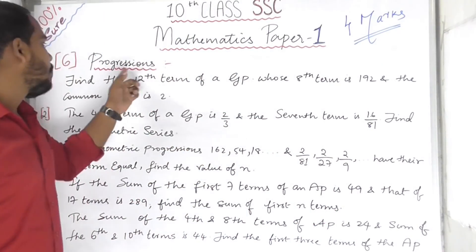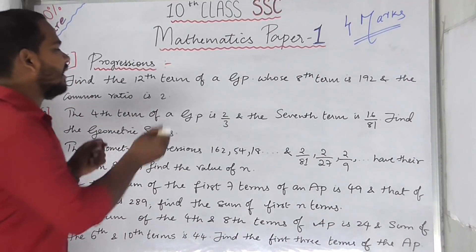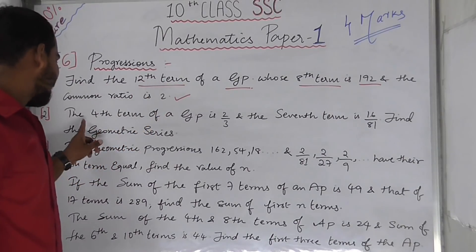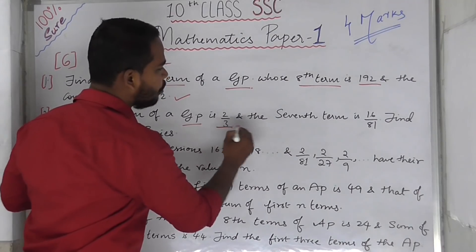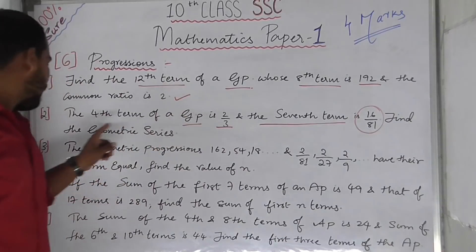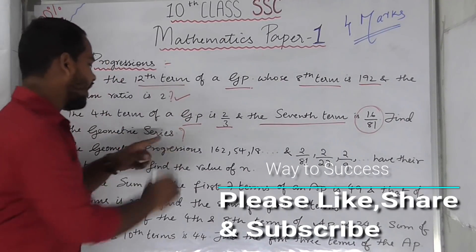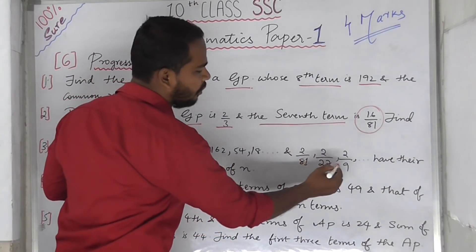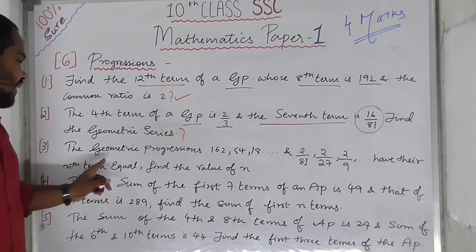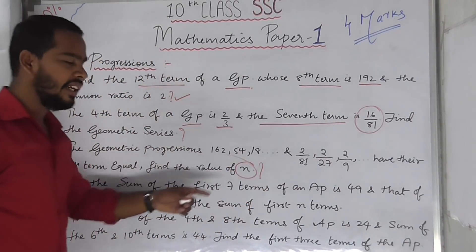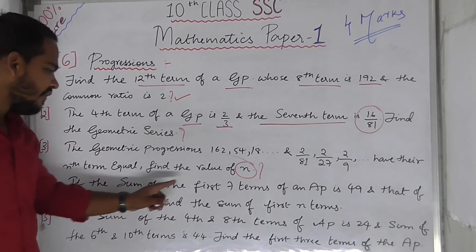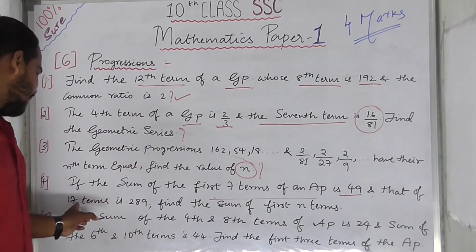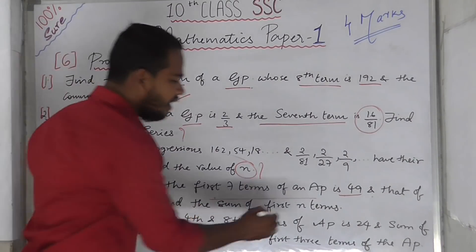The sixth chapter is progressions. Important GP questions: find the 12th term of a GP whose 8th term is 192 and common ratio is 2. If the 4th term of a GP is 2 by 3 and the 7th term is 16 by 81, find the geometric series. Also, if the GP 162, 54, 18... and 2 by 81, 2 by 27, 2 by 9... have their nth terms equal, find n. For AP: if the sum of first 7 terms is 49 and the sum of first 17 terms is 289, find the sum of first n terms. Also, if the sum of 4th and 8th terms is 24 and the sum of 6th and 10th terms is 44, find the first three terms.